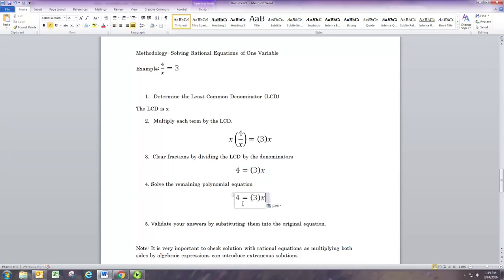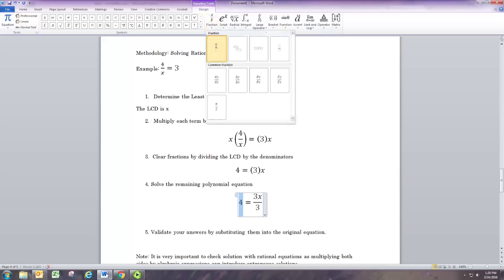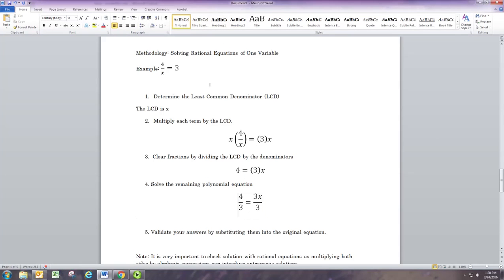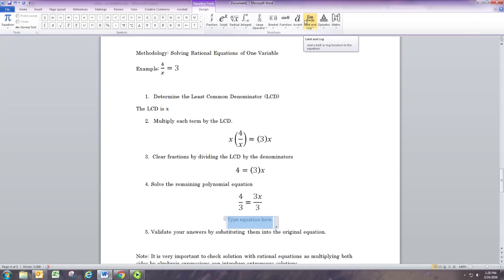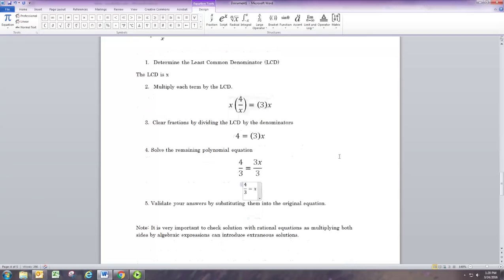All right, so the remaining equation is a polynomial equation, and in this case it's a simple linear equation. It could be quadratic because you know how to solve those. It could be another higher-order polynomial equation, but we'll just keep it simple here. All we have to do is divide by 3 on both sides, and we will have solved this. So x is 4 over 3.